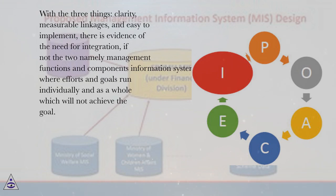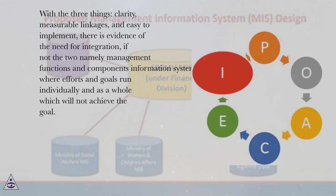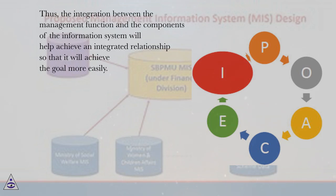With three things — clarity, measurable linkages, and easy to implement — there is evidence of the need for integration. Without integration, management functions and information system components will run individually and as a whole will not achieve the goal. Thus, the integration between the management function and the components of the information system will help achieve an integrated relationship so that it will achieve the goal more easily.